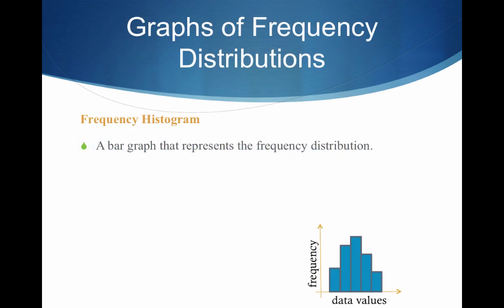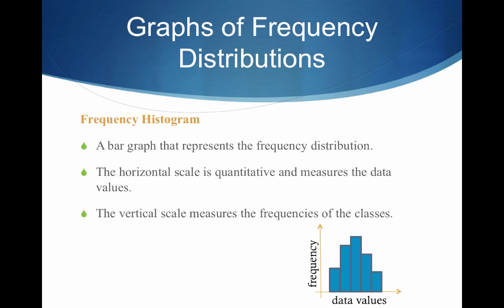Now let's talk about a frequency histogram — graphing these distributions. We typically use a bar graph where the horizontal scale is quantitative and measures the data values, in this case the GPS navigator prices, and the vertical scale measures the frequencies. The x-axis is our data, the y-axis is our frequencies, and consecutive bars must touch with no space between them.